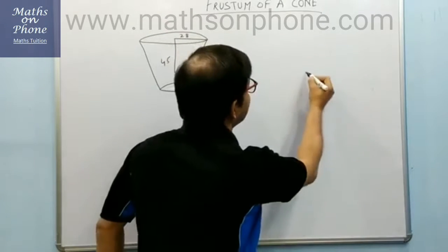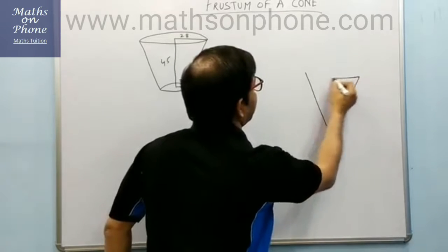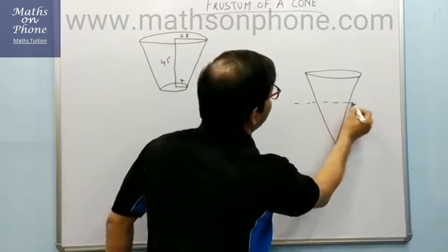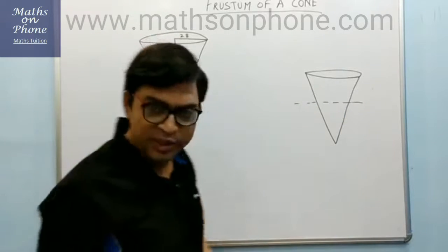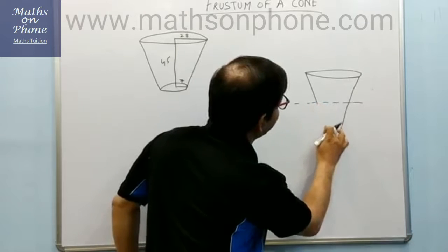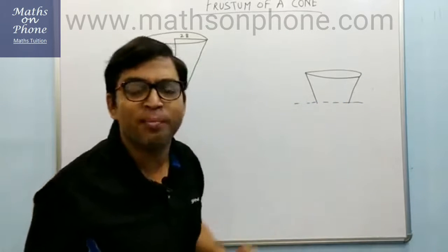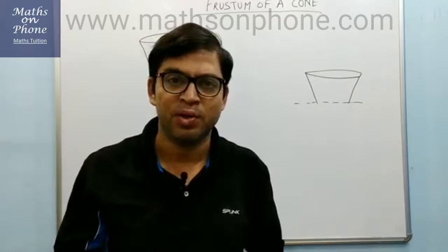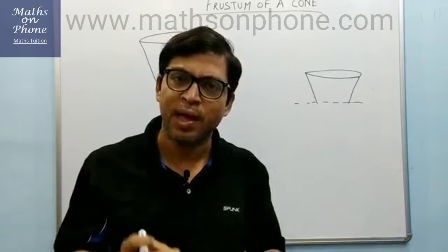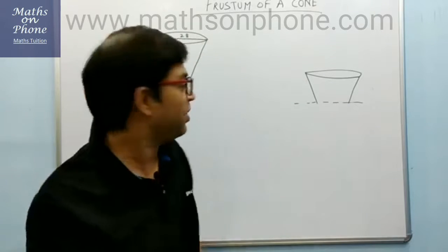See what is happening. If this is a cone, and parallel to the base of the cone we are cutting it, after cutting we are removing this top cone — this leftover portion is the frustum. So we will develop the technique to find the volume of the frustum and the surface area of the frustum.